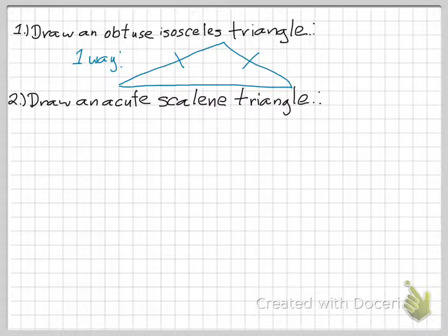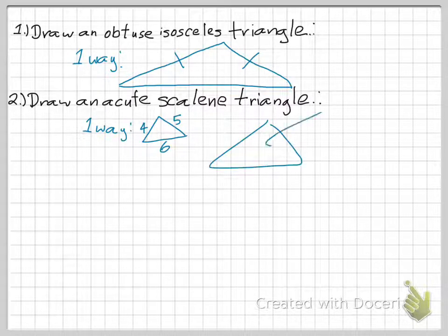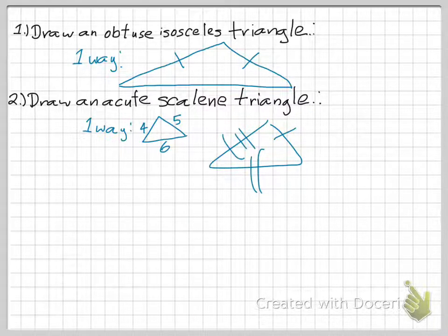Next, draw an acute scalene triangle. Pause the presentation and give that a shot. Here's one way you can do that. You can also show tick marks — one, two; one, two, three — showing three different lengths. A scalene triangle has legs of all different lengths.